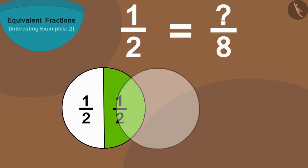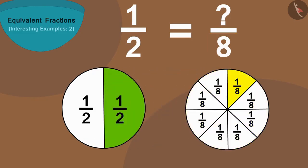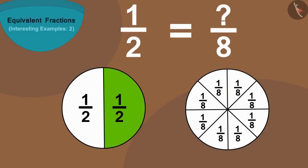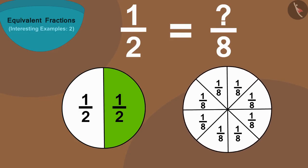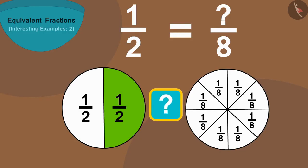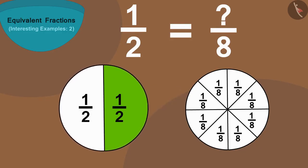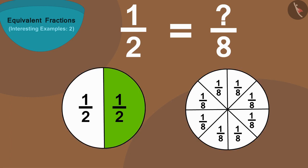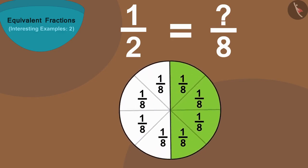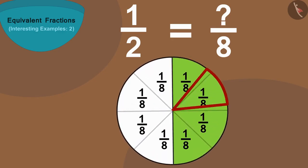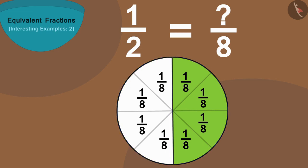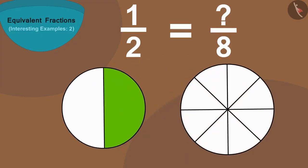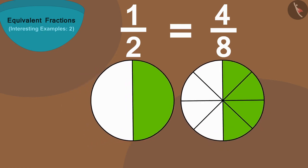Now in this fraction, the number eight shows how many parts of something are made. We can make a similar circle and divide it into eight equal parts. We have to find out how many of these eight parts we should take so that it is equal to half of the first circle. If we put these on top of each other, we can see that eight parts of this circle are equal to two parts of the first circle, and four parts of this circle is equal to one colored part of the first circle.